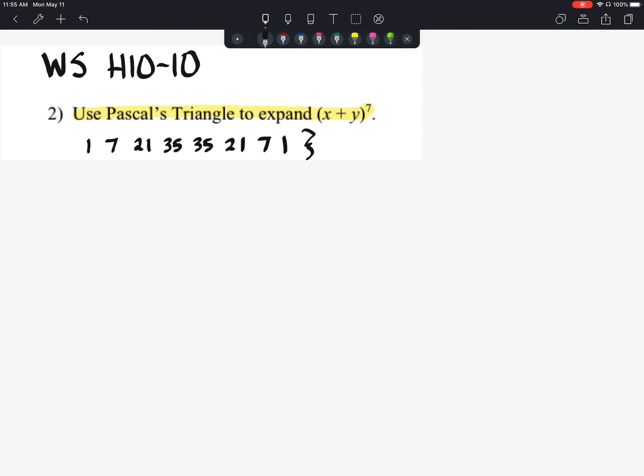There are eight terms in that row. Remember that will always be one more than the row number. So it's row number seven but there are eight terms.